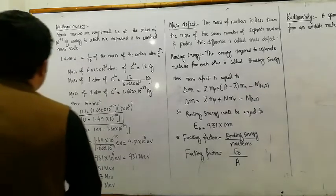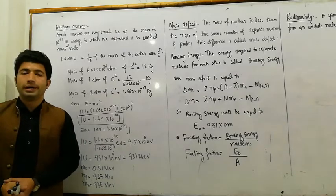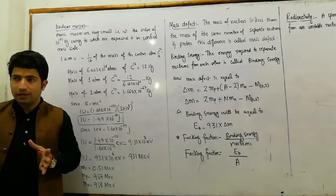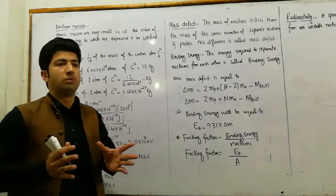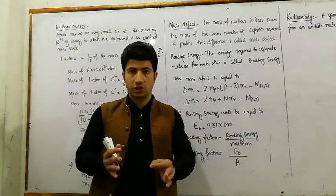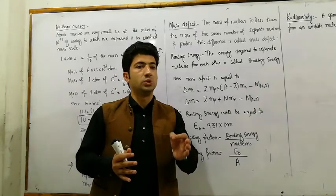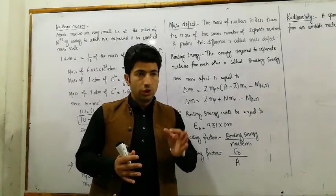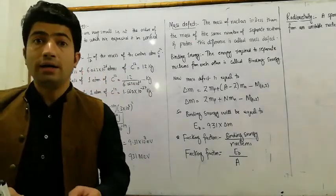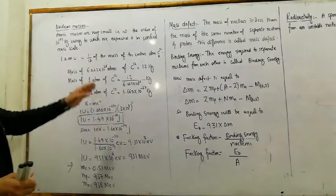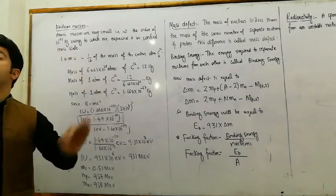Bismillahirrahmanirrahim. Nuclear masses. Nuclear masses are very small — on the order of 10 to the power minus 27 kg. The standard unit for measuring them is kg, but nuclear masses are much larger than this small scale.